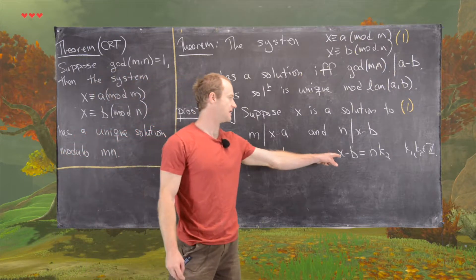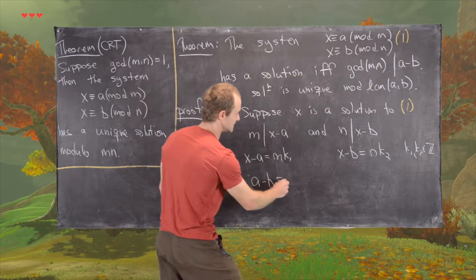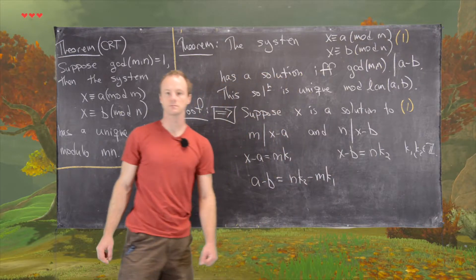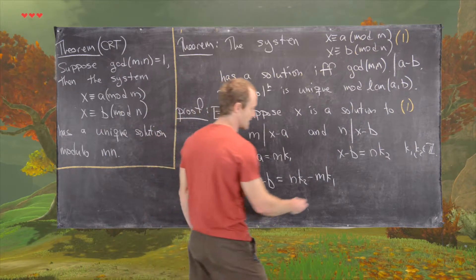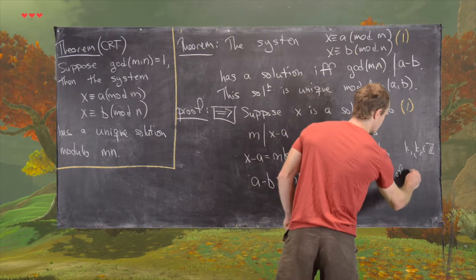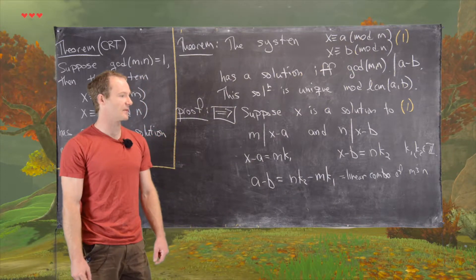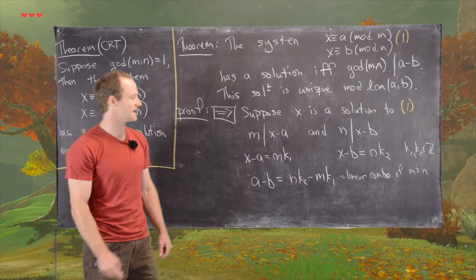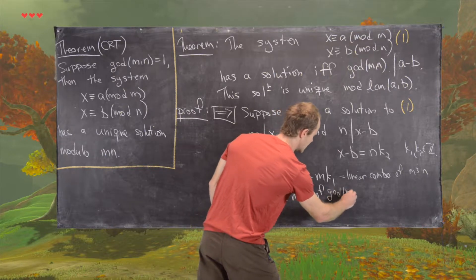Now what we want to do is subtract these two equations to form the quantity A minus B. We do the second equation minus the first, giving us A minus B equals N·K2 minus M·K1. Notice this is a linear combination of M and N. By a previous result, all linear combinations of M and N are multiples of the GCD of M and N, so A minus B is a multiple of the GCD of M and N.